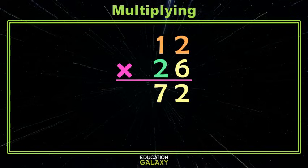Now we move on to the 2 of our 26 and we multiply 2 by 2, which gives us 4. But where does the 4 go? It goes under the 7. Why is that?